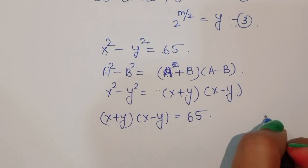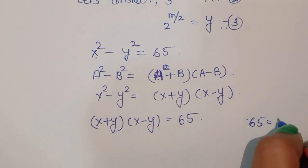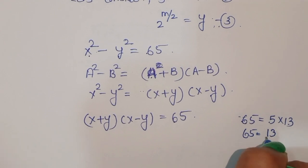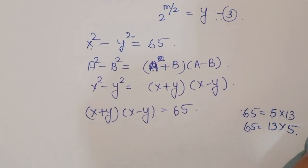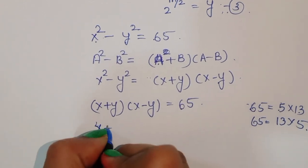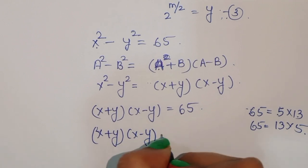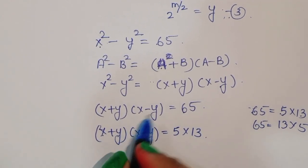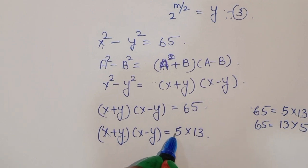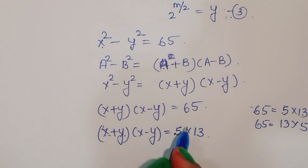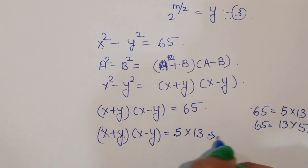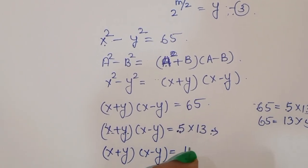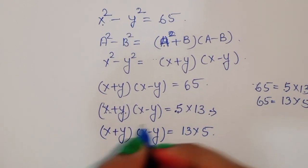Now, the factors of 65 are: 5 × 13 and 13 × 5. Since x plus y must be greater than x minus y, and both are positive, we cannot use 5 × 13 (where the larger factor would be assigned to x minus y). So we take 65 = 13 × 5, meaning x plus y equals 13 (equation 4) and x minus y equals 5 (equation 5).